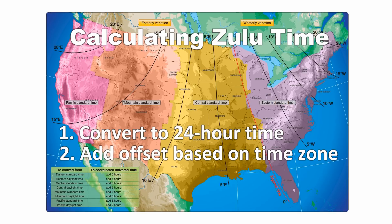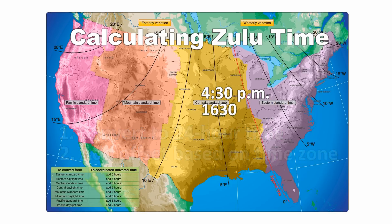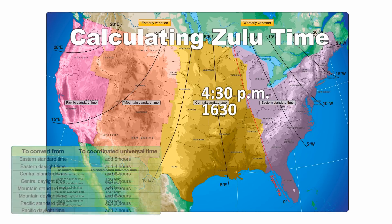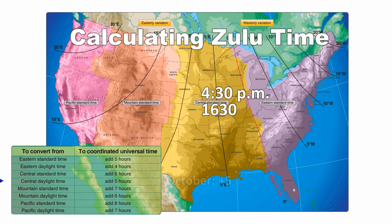Here's an example. You're in Chicago and it's 4:30 in the afternoon — what Zulu time is that? First, add 12 to 4:30 and you get 16:30 as your 24-hour time. Next, use the chart in this FAA diagram to find the offset. In the central time zone, you add 6 for standard time and 5 for daylight savings time. Let's say it's October, so you'll add 5 hours — that makes your Zulu time 21:30.